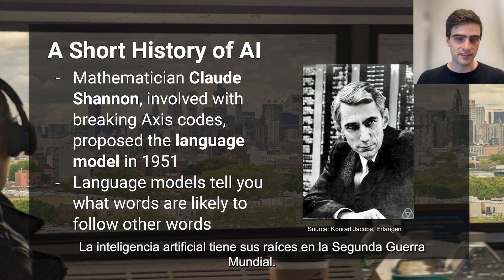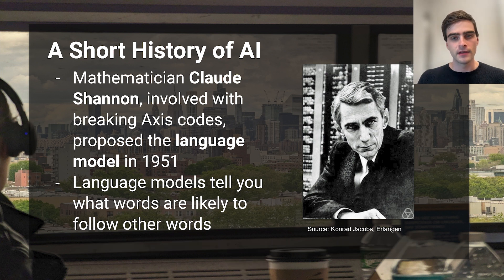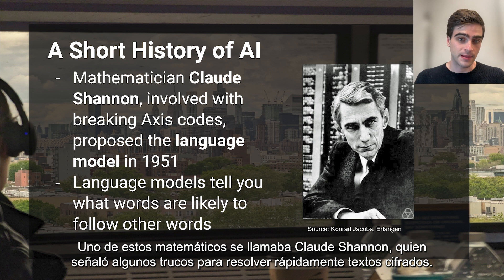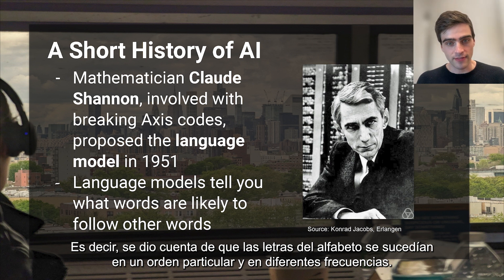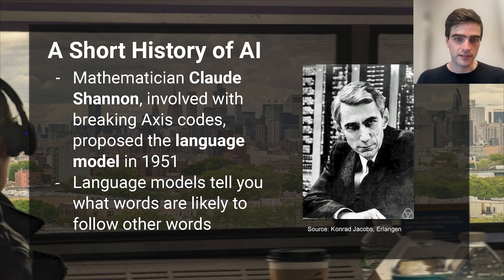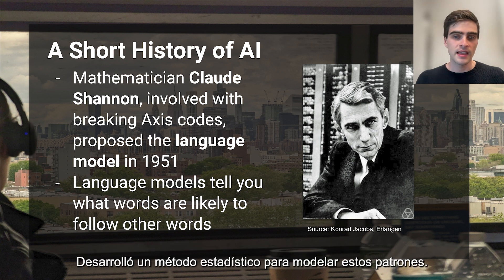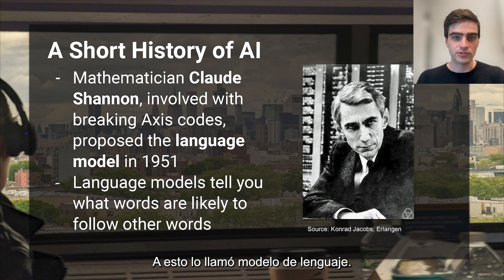Artificial intelligence has its roots in World War II. The United Kingdom and the United States both hired many mathematicians to break into German encryption. One of these mathematicians was named Claude Shannon, who noted a few tricks for quickly solving encrypted texts. Namely, he noticed letters of the alphabet follow one another in a particular order and in different frequencies. For example, a noun usually follows an article and the letter E is the most common letter of the alphabet. He developed a statistical method for modeling these patterns.